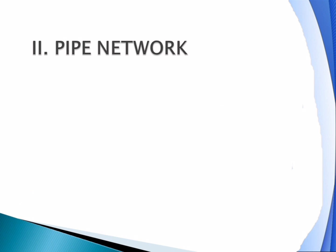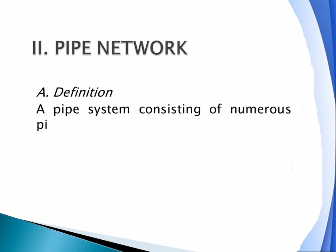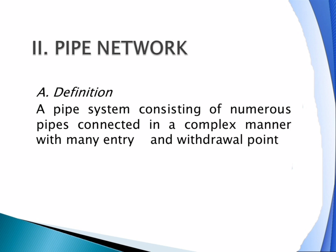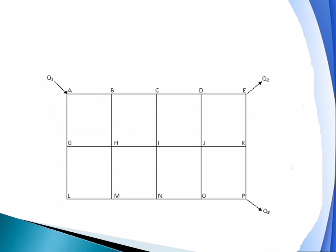We will discuss Pipe Network. This is a continuation of the topics of Chapter 2. A pipe network is a system of pipes consisting of numerous pipes connected in a complex manner with many entry and withdrawal points. This is an example of a pipe network system.